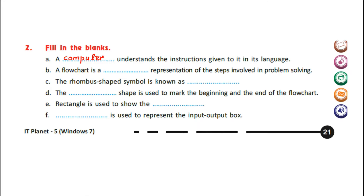B) A flowchart is a dash representation of the steps involved in problem solving. A flowchart is a diagrammatic representation. Your complete sentence is: a flowchart is a diagrammatic representation of the steps involved in problem solving.